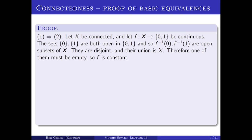If F⁻¹(0) is empty, that means everything maps to 1, so F⁻¹(1) must be the whole space. Similarly, if F⁻¹(1) is empty, then F takes the constant value 0. Now let's prove 2 implies 3: if every continuous map to {0,1} is constant, then the only open and closed sets are the whole space and the empty set.